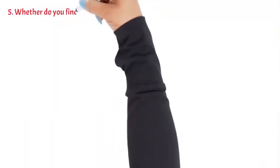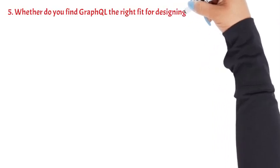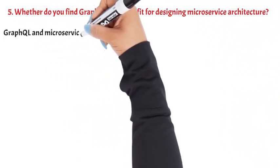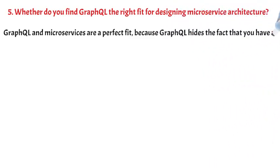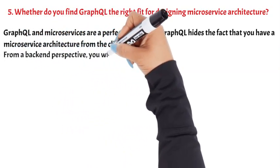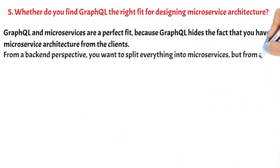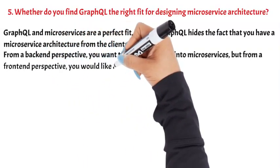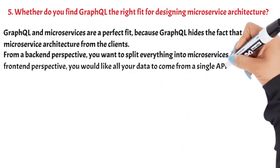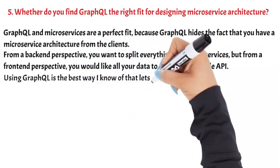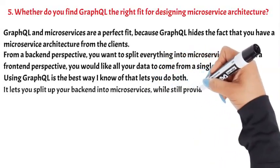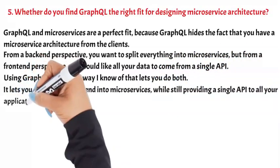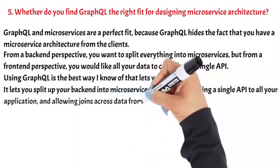Question 5: Is GraphQL the right fit for designing microservice architecture? GraphQL and microservices are a perfect fit because GraphQL hides the fact that you have a microservice architecture from the clients. From a back-end perspective, you want to split everything into microservices, but from a front-end perspective, you would like all your data to come from a single API. Using GraphQL is the best way to do both — it lets you split up your back-end into microservices, while still providing a single API to all your applications, and allowing joins across data from different services.